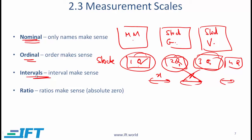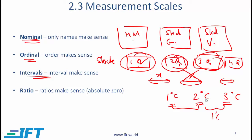With the interval scale, not only do we have an order, but the interval also makes sense. The classic example would be temperature. If you have temperatures of 1, 2, and 3 degrees centigrade, we know 3 is hotter than 2, and the difference between them is equal — each interval is 1 degree. However, ratio doesn't make sense here: we can't say that 2 degrees centigrade is twice as hot as 1 degree centigrade.